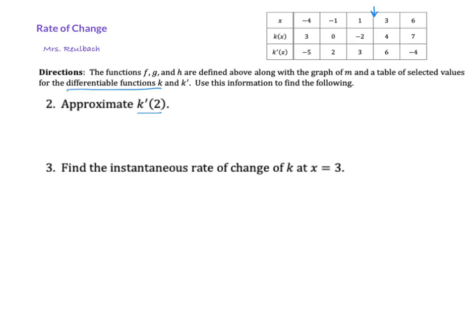Since we don't have the value of two, we're going to approximate it, and the best way to approximate a function is to use the average rate of change. So if you want to approximate or estimate the instantaneous rate of change, which is what this is asking us to do, then you're going to use the average rate of change.